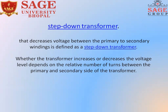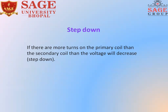This is the step down transformer, and a step down transformer and step up transformer are opposite to each other. If you talk about the step down transformer in terms of the number of turns, if there are more turns on the primary coil than the secondary coil, then the voltage will decrease — that is called a step down transformer.